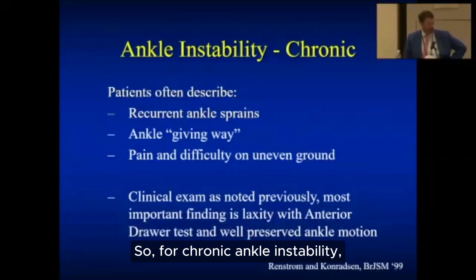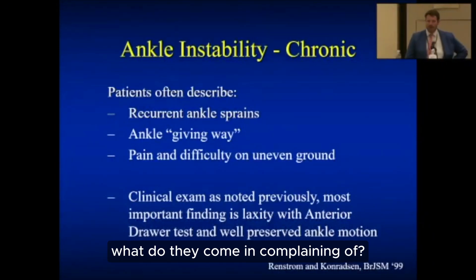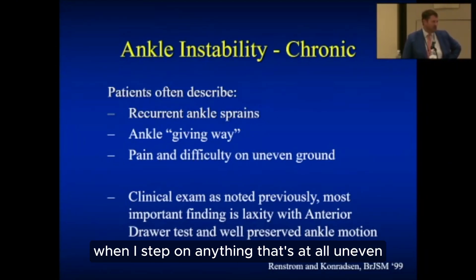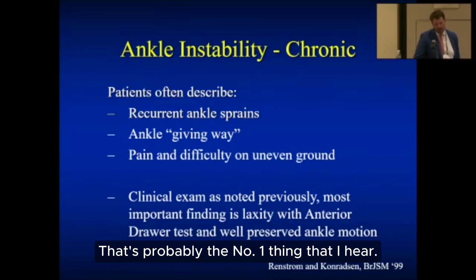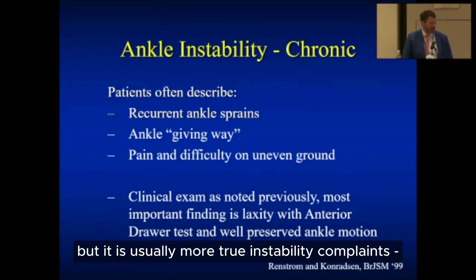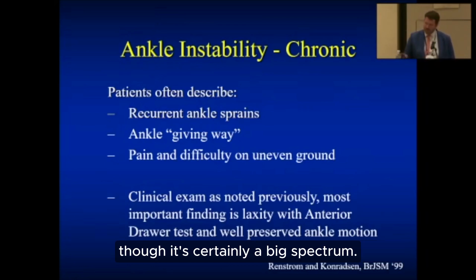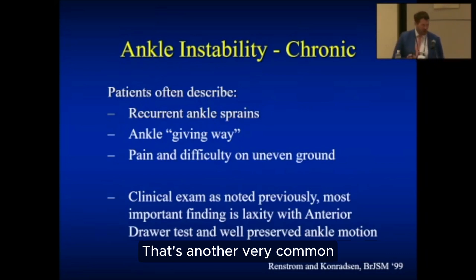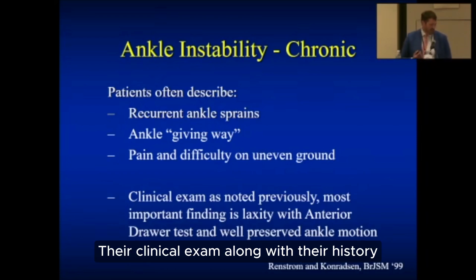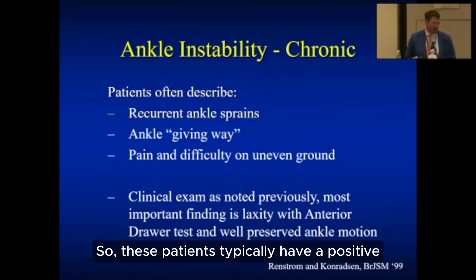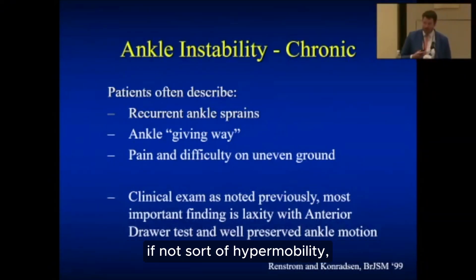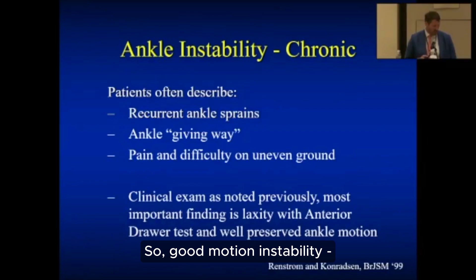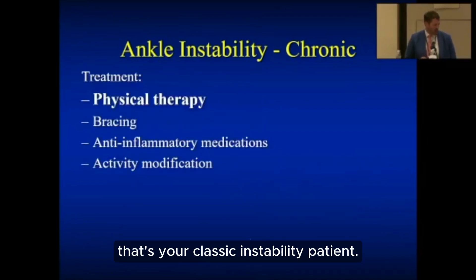For chronic ankle instability, the most common complaint from EDS patients is that when they step on anything uneven, their ankle rolls — that's probably the number one thing I hear. Pain is certainly present, but it's usually more of a true instability complaint. People describe their ankle giving way or just not feeling stable. On clinical exam, these patients typically have a positive anterior drawer and plenty of range of motion — if not hypermobility — which makes sense with this diagnosis. Good motion combined with instability and a sensation of giving way is the classic chronic instability presentation.